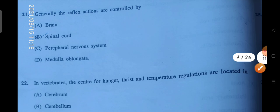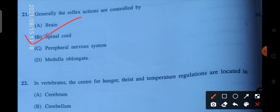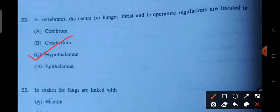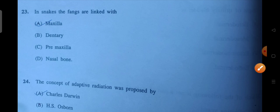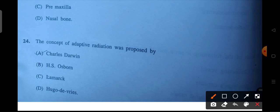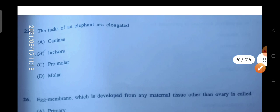Next is generally the reflex actions are controlled by. So who controls your reflex actions? Spinal cord. Next is in vertebrates the center of hunger, thirst, and temperature regulations are located at. So where is it located? In your hypothalamus. Next question is in snakes the fangs are linked with. So what are they linked with? They are linked with your maxilla. Next is the concept of adaptive radiation was proposed by. You all know, Charles Darwin.